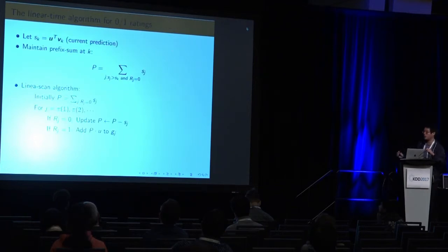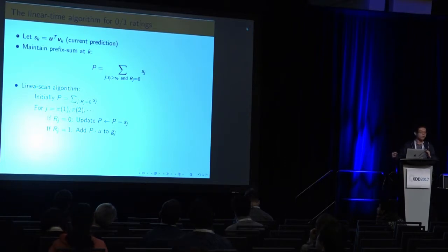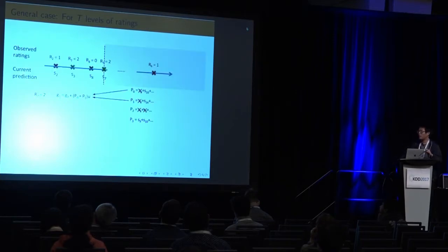This is what I summarize for simplified version. You first maintain your prefix sum at that k. When you do a linear scan, you just need to do two operations. When the rating is zero, you do update all the prefix sum. When the rating is one, you add using the prefix sum to update the gradient matrix. Here's a more complicated version when you not only have zero-one ratings, you have t levels of ratings. Then you don't have only one prefix sum. You have one for each level. For this more complicated case, you have to do like a sum of the prefix sum for each level lower than you.